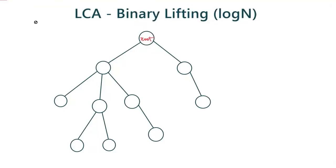In this video, we will be seeing how to find the least common ancestor of two nodes using binary lifting. The complexity for finding the LCA of two nodes will be O(log n).